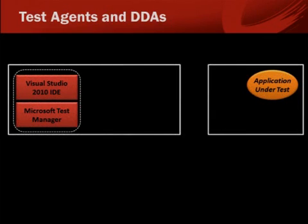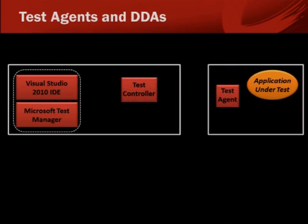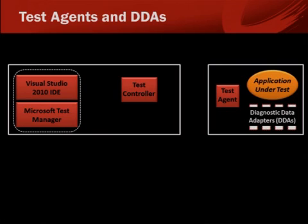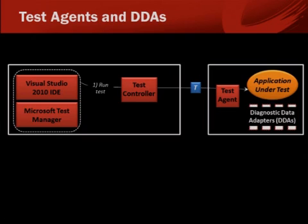Suppose you have an application under test running on one machine and another machine from which you're submitting tests, either from the Visual Studio IDE or from Microsoft Test Manager. This process relies on a test controller and a test agent on the two machines, and it relies on DDAs running with the application under test. The tester submits a test through the controller and the agent. The application runs the tests, and the DDAs gather information about the application while it's running the test. The test agent then sends back the result of the test and diagnostic data produced by the DDAs.